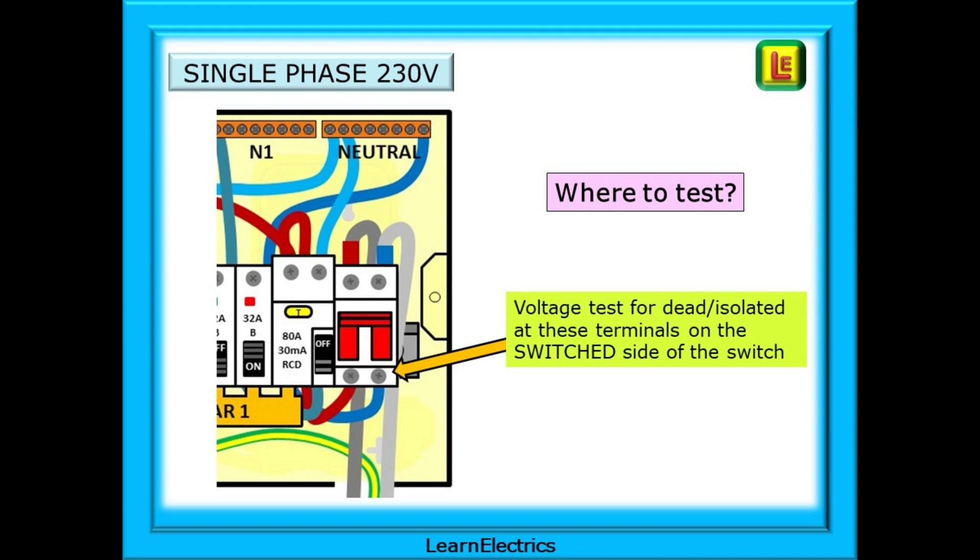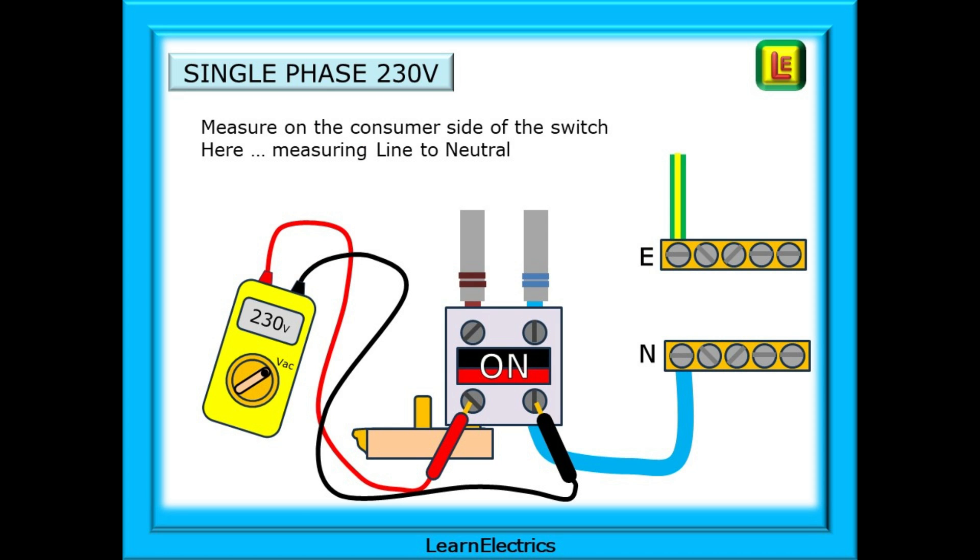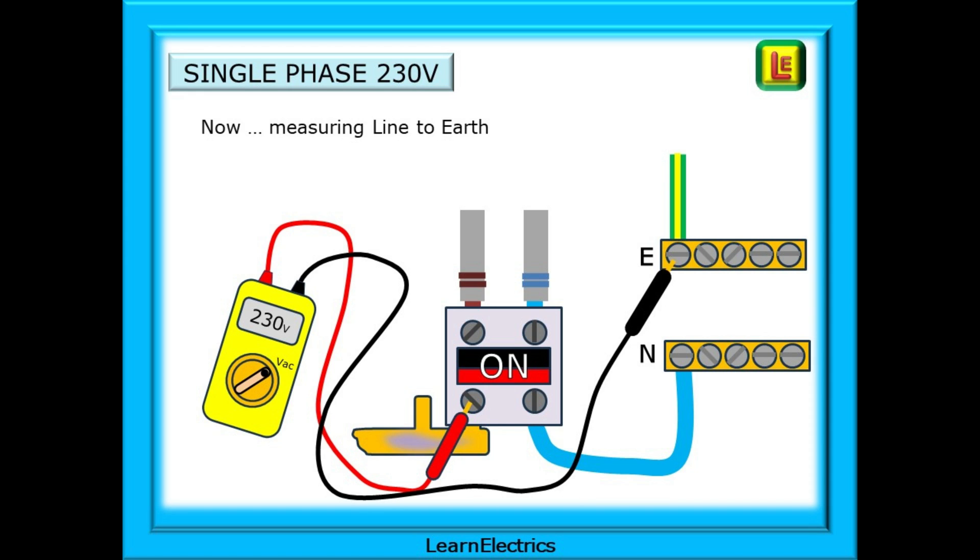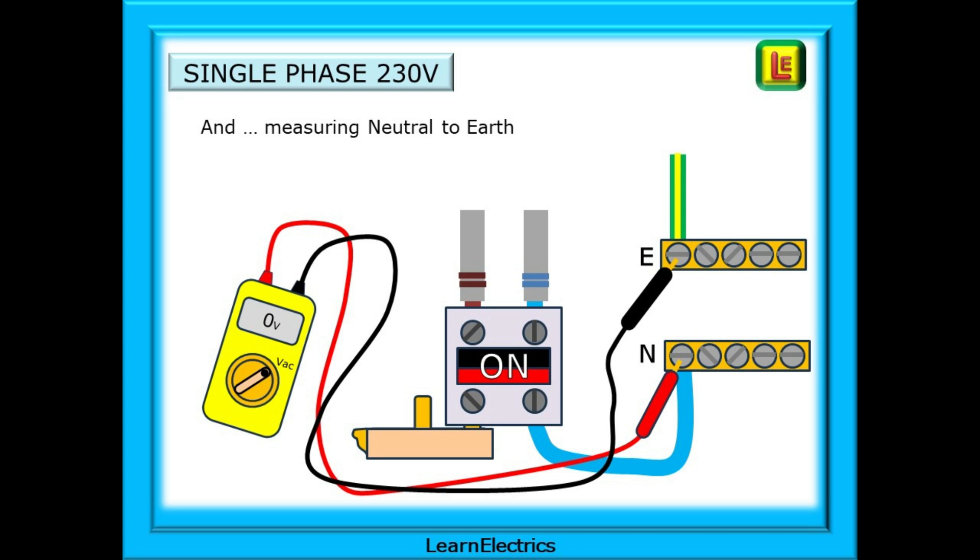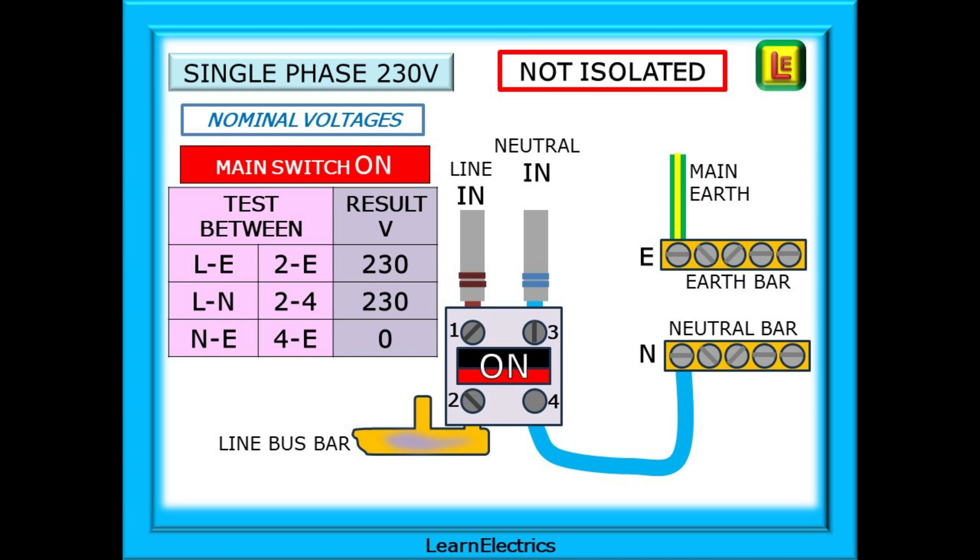Where are we testing? We will voltage test for dead or isolated at the bottom terminals, those on the switched side of the switch. Even though we might be testing for dead, testing for no voltage, we should treat these as live tests and take suitable precautions for the safety of ourselves and others. Here, you might be measuring the line to neutral, and you will be close to potentially live parts. Is the bus bar covered with a plastic sleeve? Are there exposed connections where breakers are missing? And so on. Measuring line to earth still requires you to be close to the bus bar, which may or may not be covered, and testing neutral to earth is the last of the three tests on the single-phase consumer unit.